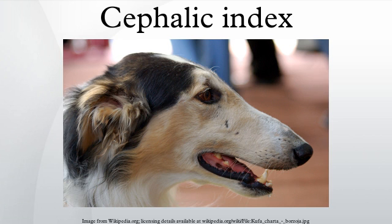A mesocephalic skull is of intermediate length and width. Mesocephalic skulls are not markedly brachycephalic or dolichocephalic. When dealing with animals, especially dogs, the more appropriate and commonly used term is mesaticephalic, which is a ratio of head to nasal cavity. The breeds below exemplify this category.